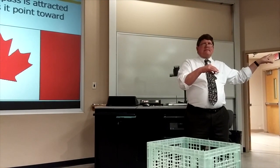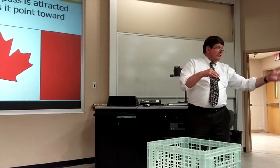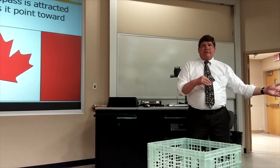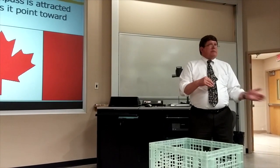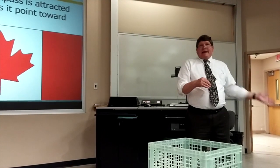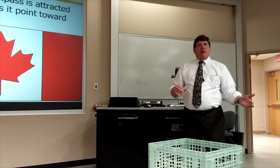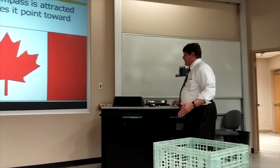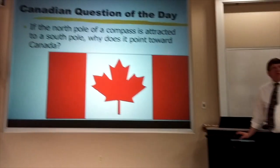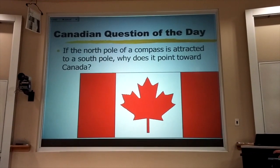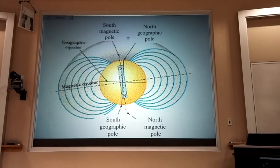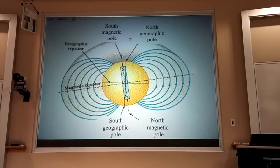But you're right, the problem is calling these things north and south. We should have called them red and blue or A and B, then there would be no confusion. But because we call the north-seeking pole the north pole, what we have in Canada must be a south pole, because the north-seeking pole is attracted to it.